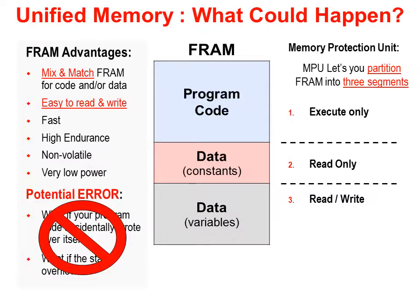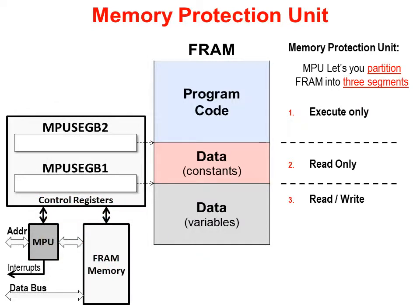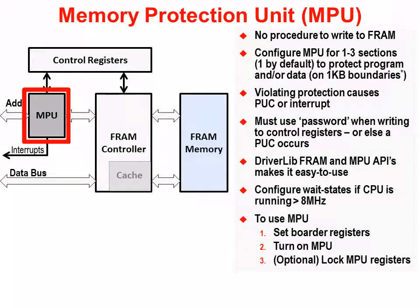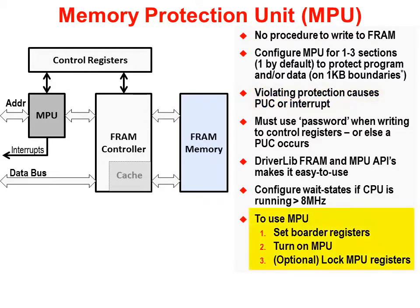In this way, we can protect our code. Basically, the MPU lets us segment the FRAM into three parts. We can then apply read, write, and execute permissions to each segment. By default, the FRAM is set up as one segment that has all the permissions, but it's easy to configure the MPU. It has two registers in which you specify the address boundaries between each segment. The MPU watches each access to FRAM and prevents any unauthorized access — if an incorrect access is attempted, the MPU throws an interrupt or a PUC reset.